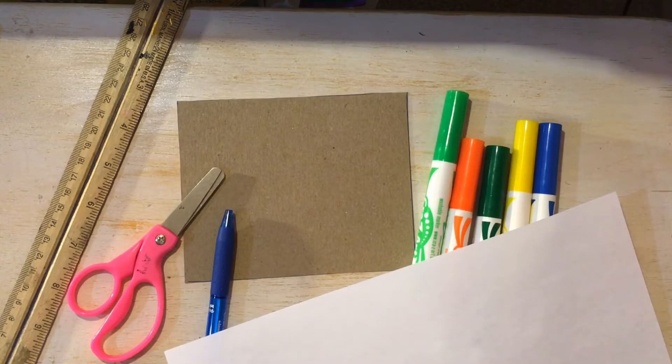We are going to make a tessellation. You're going to need the cardboard that I gave you, a pen, scissors, ruler, markers, and a piece of paper.